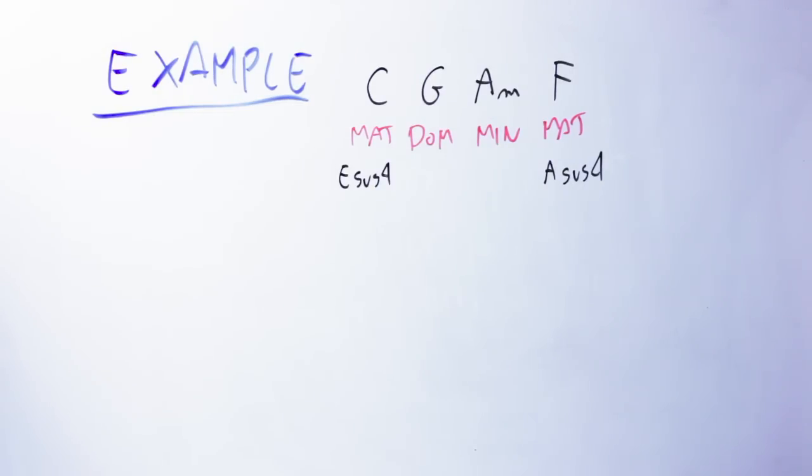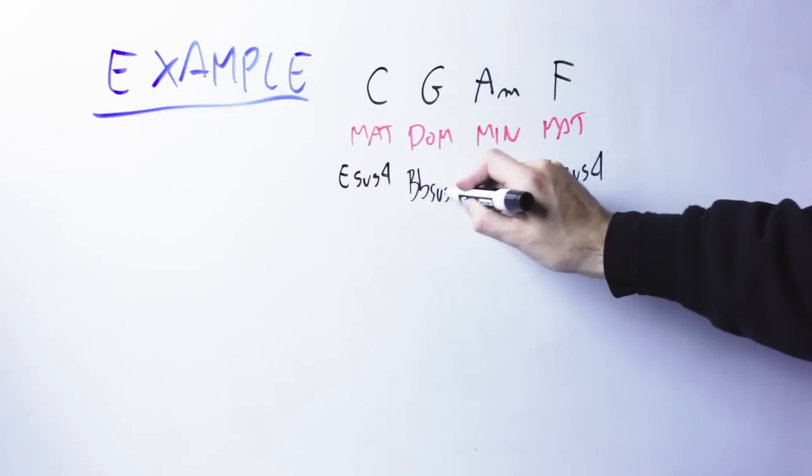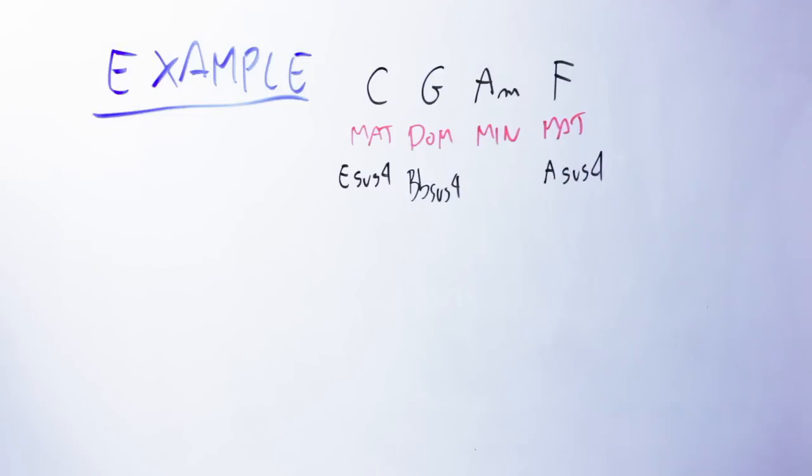And I say, let's assume it's altered, because it simply sounds more spicy. On dominant altered chords, I play the suspended fourth chord, built on the minor third of the chord. So on G, the minor third is B flat, and so I'm gonna play a B flat suspended fourth on top.